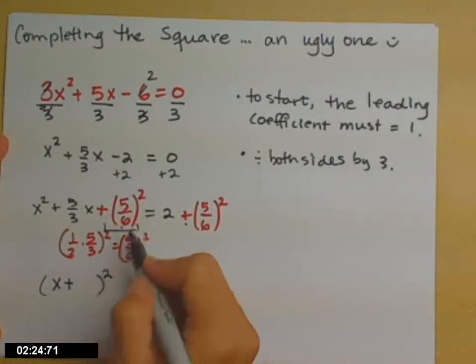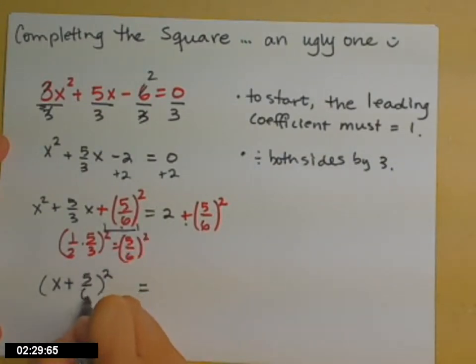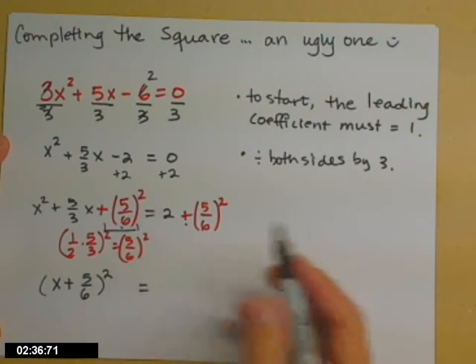And now this last part, especially when it's a fraction, it's sometimes tricky to figure out, but it's whatever was in the parentheses before you square it. So x plus 5 sixths squared, if you square that out, you would get what we have up here.